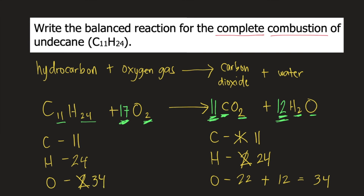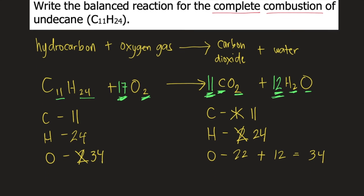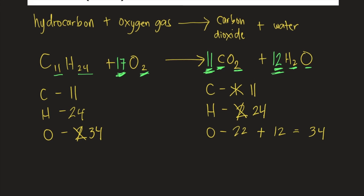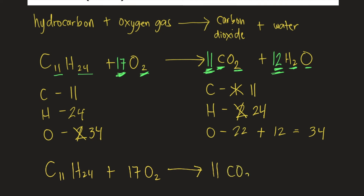Now that all elements are balanced, the reaction is balanced. The complete combustion of undecane is: C11H24 + 17O2 → 11CO2 + 12H2O.